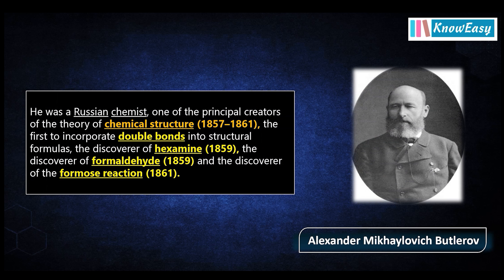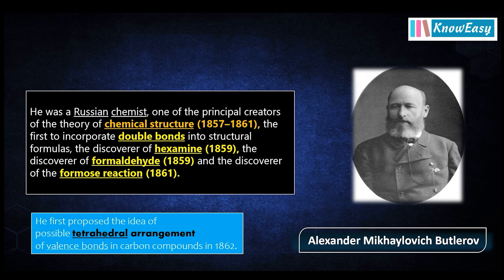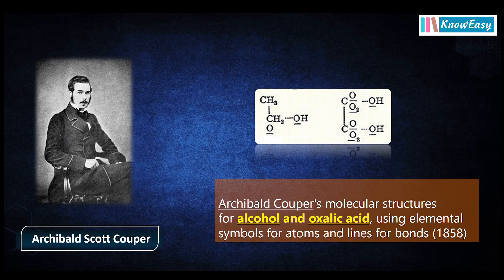Butlerow was a Russian chemist and one of the principal creators of the theory of chemical structure. He was the first to incorporate double bonds into structural formulas and the discoverer of hexamine, formaldehyde, and the Formose reaction. He first proposed the idea of a possible tetrahedral arrangement of valent bonds in carbon compounds in 1862, laying the foundation for modern structural theory in organic chemistry. Meanwhile, in Scotland, another brilliant mind was at work — scientist Archibald Couper. In 1858, he independently proposed a similar idea of chemical structure, stating that one carbon atom is connected to another carbon atom through bonds.